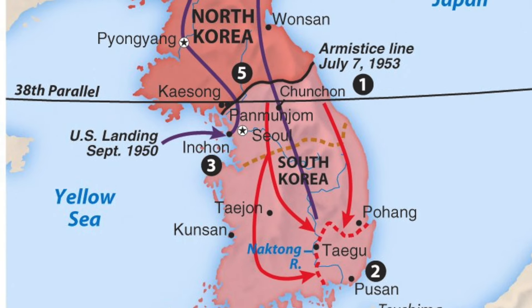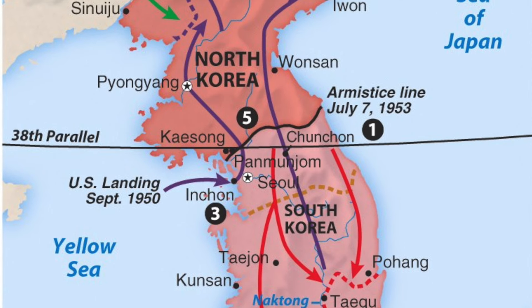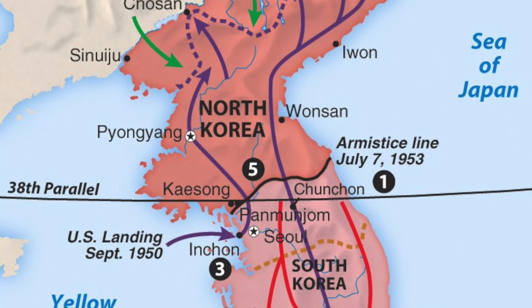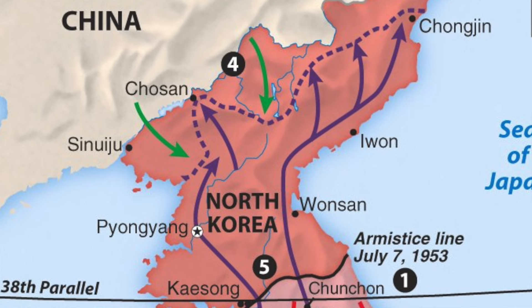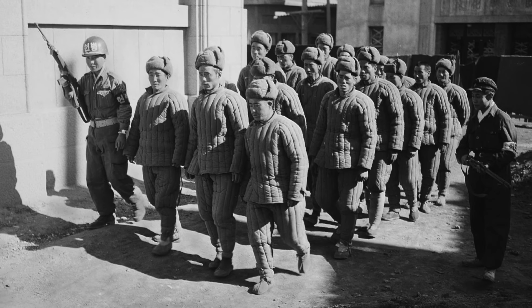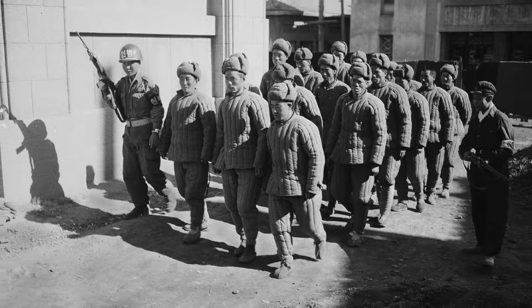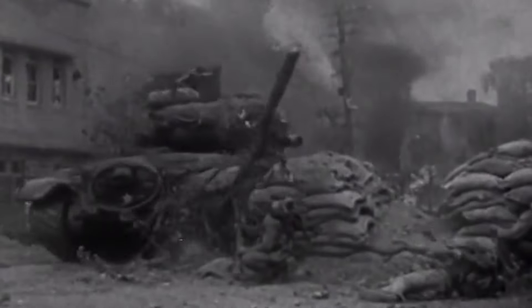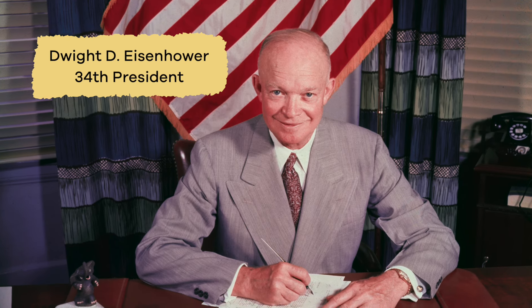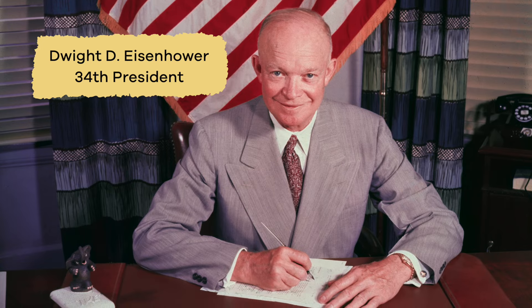The war continued with MacArthur trying to push the North further towards the northern border, but the Chinese were not happy about this, so they entered the war as well. The fighting lasted near the border over the next couple of years, with back-and-forth retaliation and attacks from both sides. The South Korean border was eventually strengthened, and the war finally ended with a treaty encouraged by the new U.S. President, Dwight D. Eisenhower, on July 17, 1953.